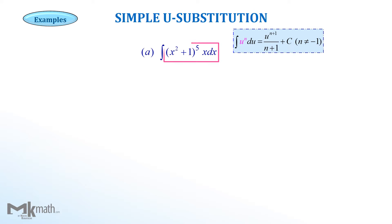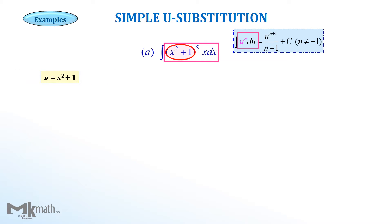First, we need to match up the integrand with the left side of the formula. x squared plus 1 should be u. Once we decide u, we take the derivative of u to get 2x, then convert it to the differential of u as 2x dx.